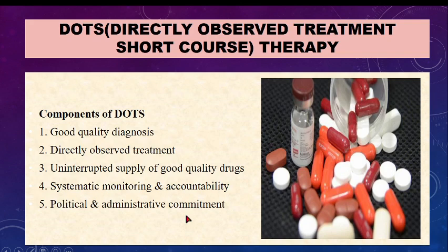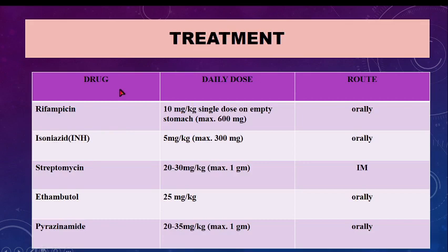Anti-TB drugs used include: Rifampicin 10 mg/kg single dose on empty stomach (max 600 mg, orally); Isoniazid 5 mg/kg orally; Streptomycin 20–30 mg/kg IM (max 1 gram); Ethambutol 25 mg/kg orally; and Pyrazinamide 20–25 mg/kg orally (max 1 gram). These are all anti-tubercular drugs given in combination.